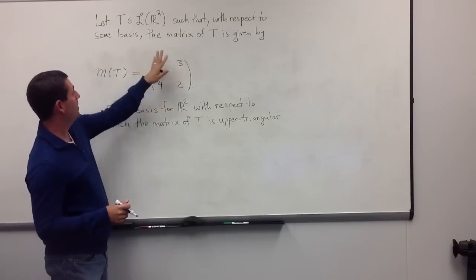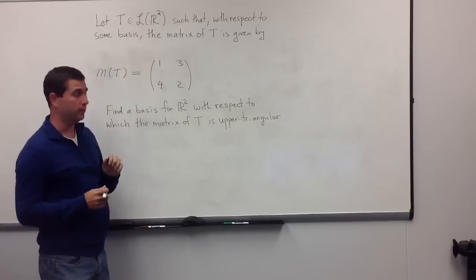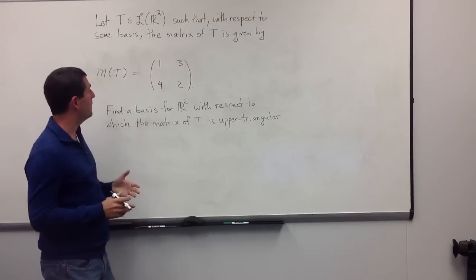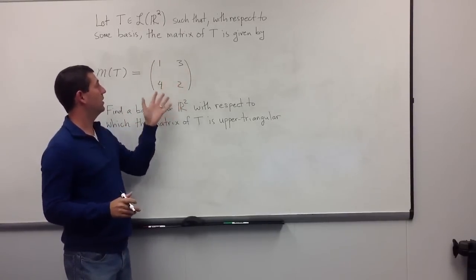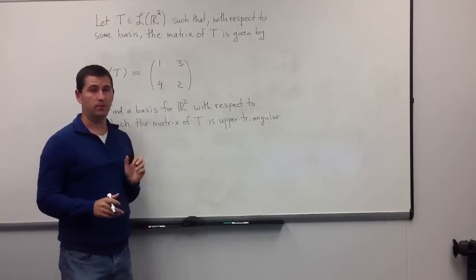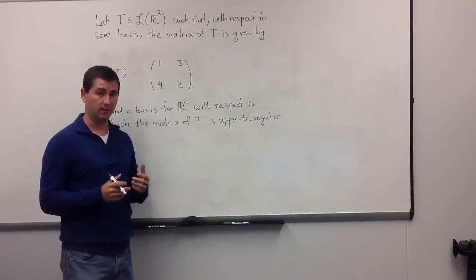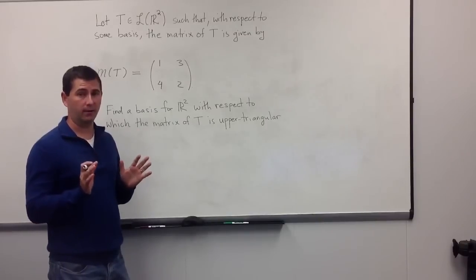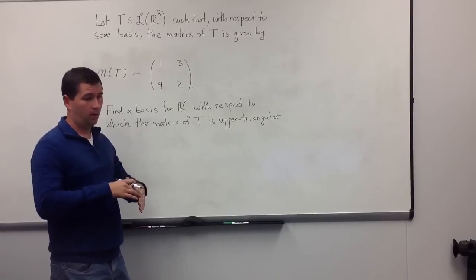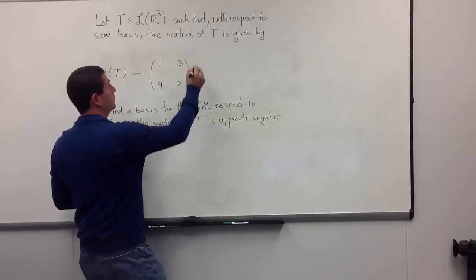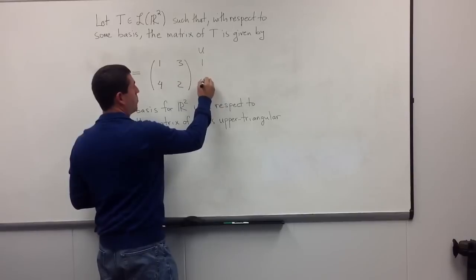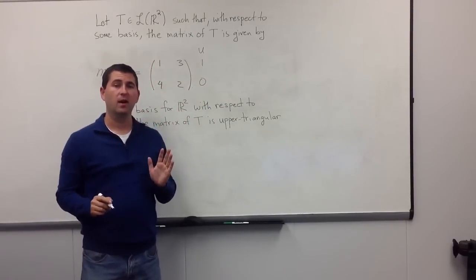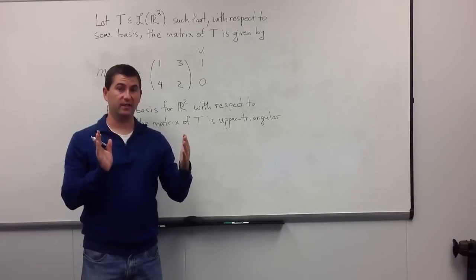We have here a matrix representing an operator T over R². We would like to change the basis — which we don't know at the start — but we want to find some basis so that the matrix is no longer just some arbitrary 2x2 matrix, but one which is in upper triangular form. We're going to choose a non-zero vector in the vector space — how about (1, 0)? I'm going to give it the name u, and I'm going to apply the operator T to this vector until I get a list which is linearly dependent.